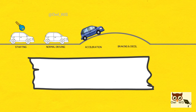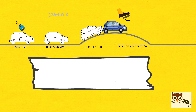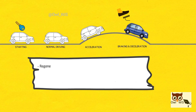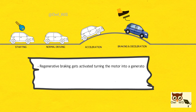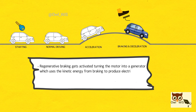Braking and deceleration. Every time you put your foot on the brake or lift off the accelerator, regenerative braking gets activated, turning the motor into a generator, which uses the kinetic energy from braking to produce electric energy used to charge the battery for later use.